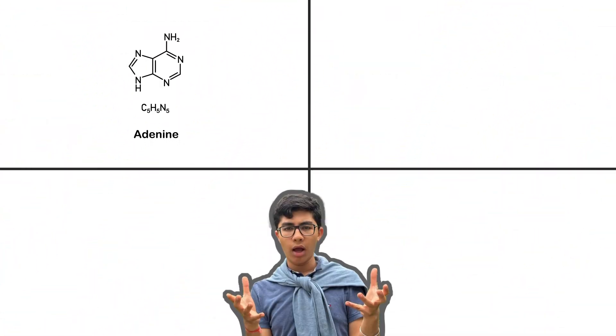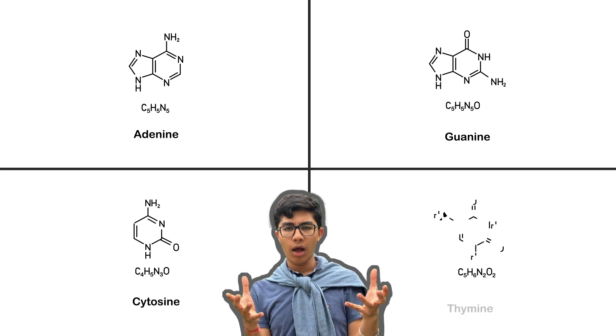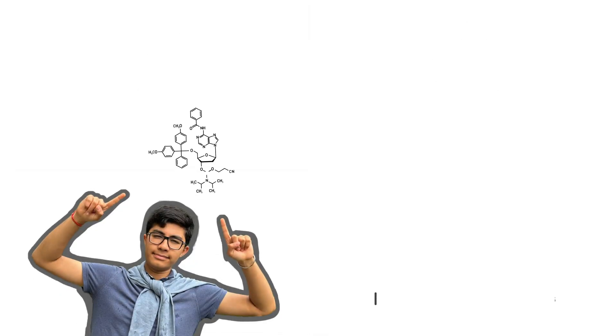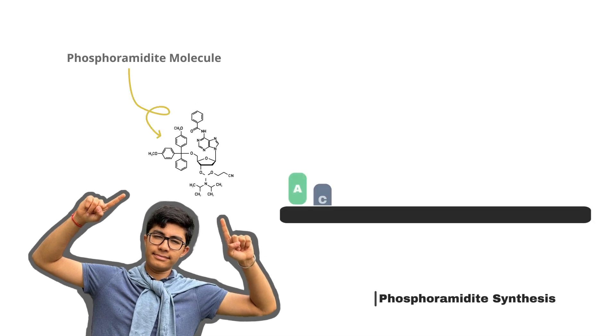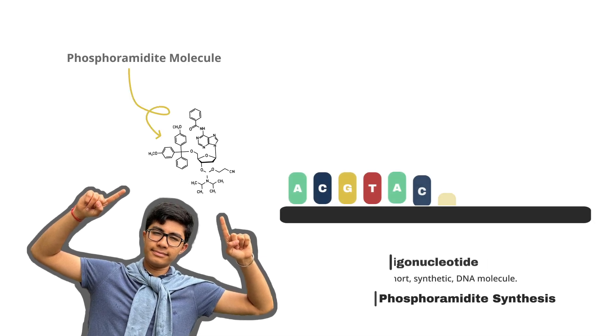Natural DNA stores information in four nucleotide bases. Synthetic DNA conveys information by rearranging these bases in chosen orders. Phosphoramidite synthesis creates short synthetic DNA molecules or oligonucleotides. To create longer molecules to store more DNA, we use a printer.